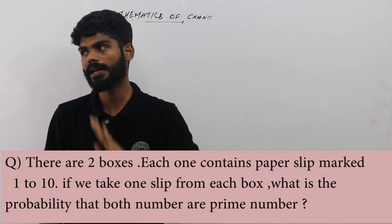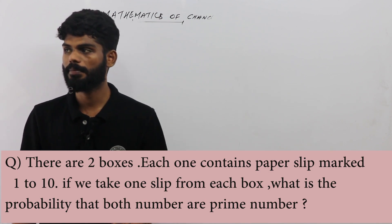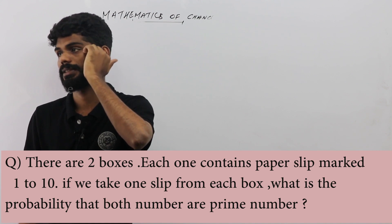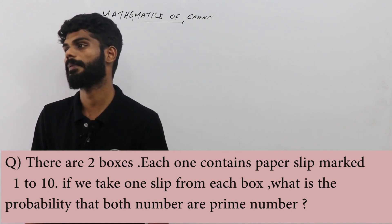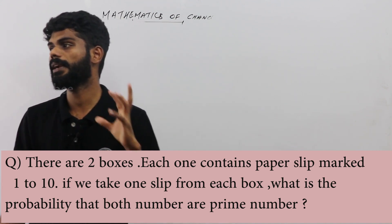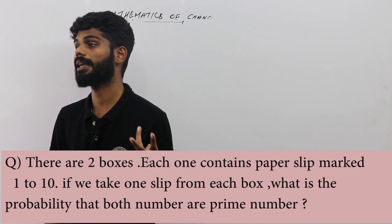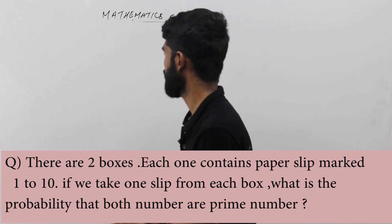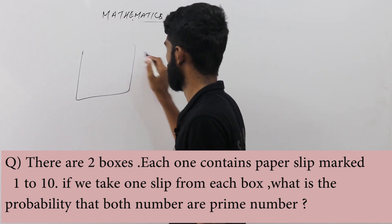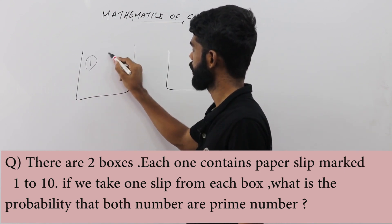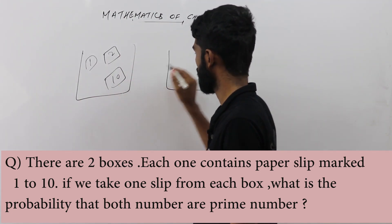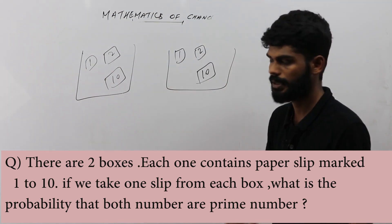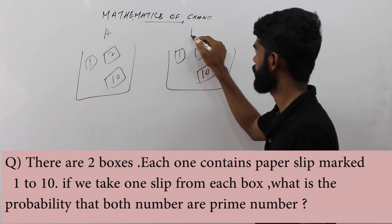Next question: there are two boxes, each containing paper slips marked 1 to 10. If we take one slip from each box, what is the probability that both numbers drawn are prime? We label the boxes A and B, each with 10 numbers.